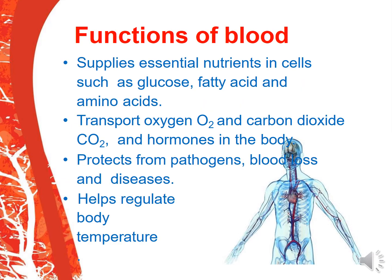What are the functions of blood? Blood has 4 important functions. It supplies essential nutrients to cells such as glucose, fatty acids, and amino acids. It transports oxygen and carbon dioxide, and also hormones in the body. It protects from pathogens, blood loss, and diseases. It helps regulate body temperature.